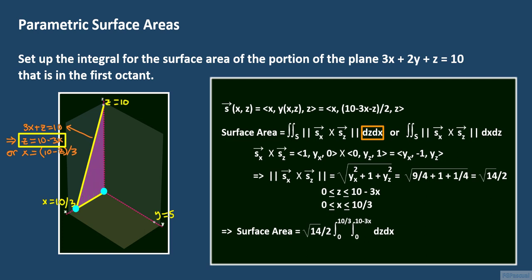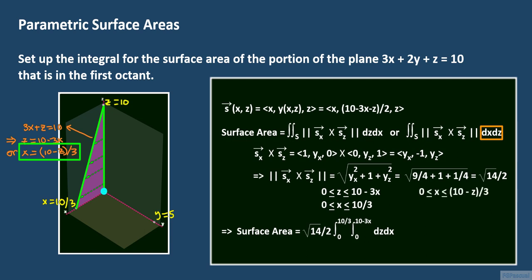Switching the order so that x is integrated first, the region starts on the z-axis where x equals 0, and ends on the xz trace where x equals (10 minus z) all over 3. The minimum value of z is 0 and the maximum is 10 at the z-intercept. One can verify that both these integrals equal 25 times the square root of 14, all over 3.